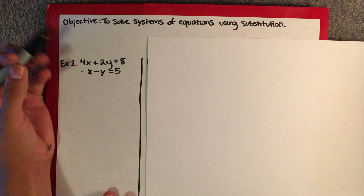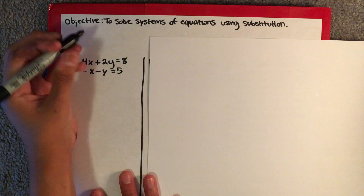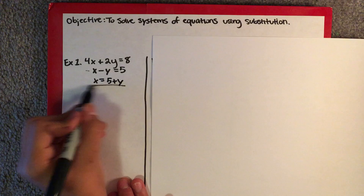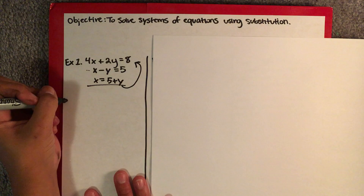In this case, it would be much easier to use this second equation and solve for x, because you can simply add the y over and you will have what x equals. So in this case, x is equal to 5 plus y.